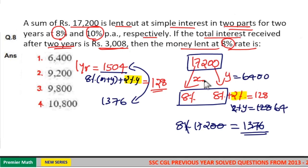Then, we need X here. X is equal to the difference between 17,200 and 6,400.